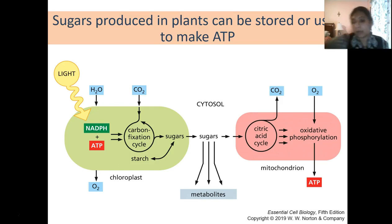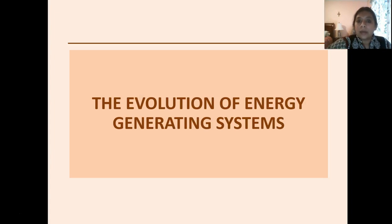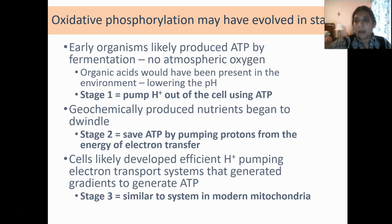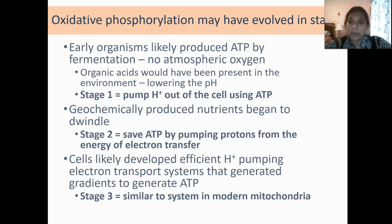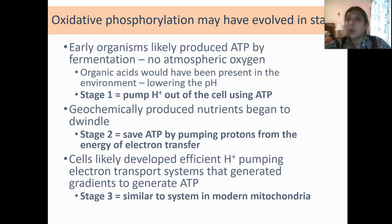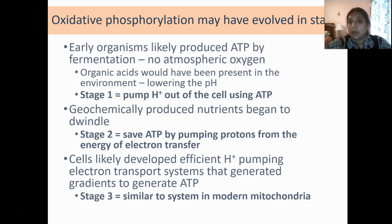Sugars can also be utilized in other parts of the cell for functions including DNA and RNA formation. The evolution of these energy systems required many different steps — it didn't happen overnight. Early organisms were likely producing ATP through fermentation, since there was not enough atmospheric oxygen. However, organic acids present in the environment and lactic acid from fermentation were lowering the environmental pH. In the first stage, cells would have generated some type of proton pump to expel protons using ATP, allowing the cell to survive without dangerous pH lowering.